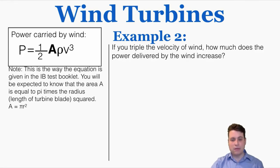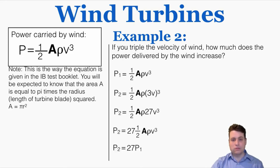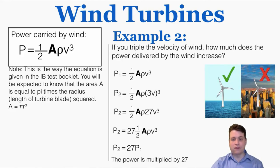Example 2: If you triple the velocity of wind, how much does the power increase? Using proportional reasoning: original power P = ½Aρv³. New power = ½Aρ(3v)³ = ½Aρ × 27v³ = 27P. So tripling the wind speed increases power by a factor of 27. This shows why it's crucial to build wind turbines in places with consistent high wind — even missing a few meters per second drastically changes power output, which is why turbines are often built on oceans rather than in cities.